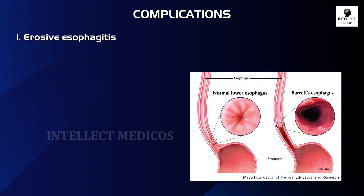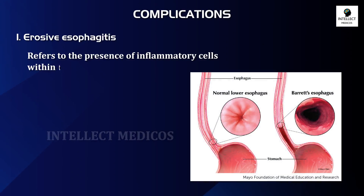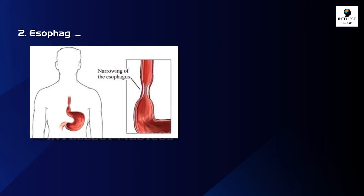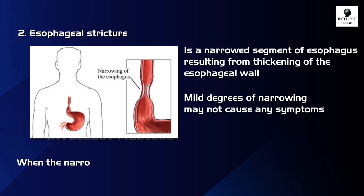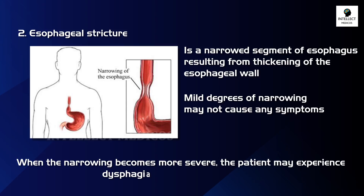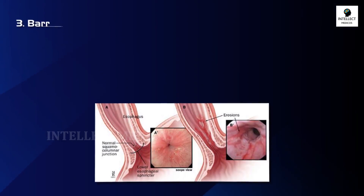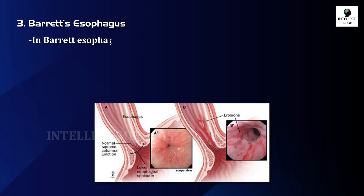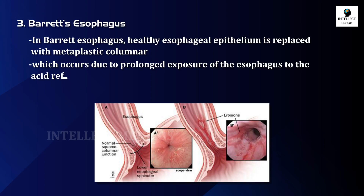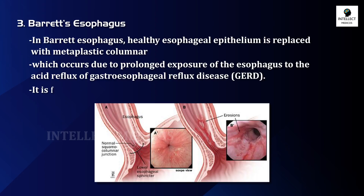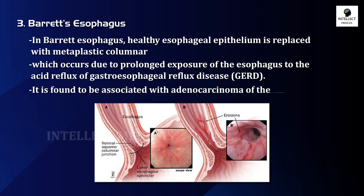The complications of GERD: First is erosive esophagitis — the presence of inflammatory cells within the esophageal mucosa. Second is esophageal stricture — a narrowed segment of esophagus resulting from thickening of the esophageal wall. Mild narrowing may not cause symptoms, but when more severe, the patient may experience dysphagia. Third is Barrett's esophagus, where healthy esophageal epithelium is replaced with metaplastic columnar epithelium due to prolonged exposure to acid reflux. It is associated with adenocarcinoma of the esophagus.